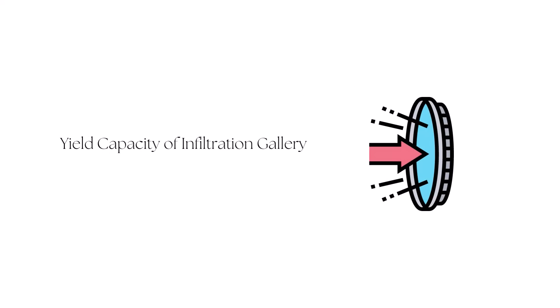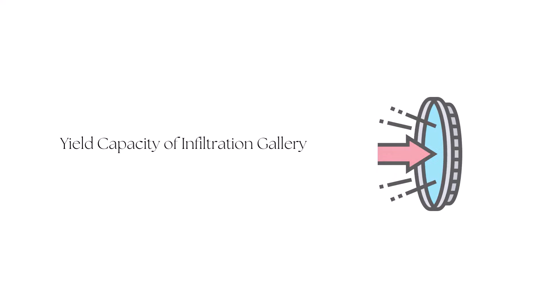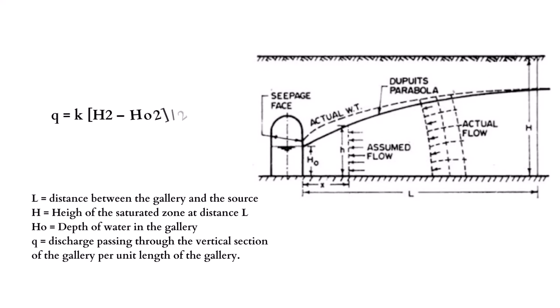The yield capacity of infiltration galleries is calculated using the formula: q = k(h² − h₀²) / (2l), where l is the distance between the gallery and the source (river or lake), h is the height of the saturated zone at a distance l, h₀ is the depth of water in the gallery, and q is the discharge passing through the vertical section of the gallery per unit length of the gallery.